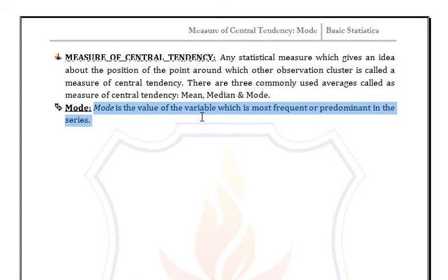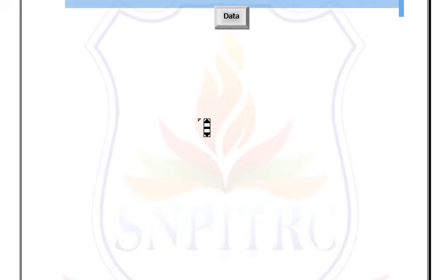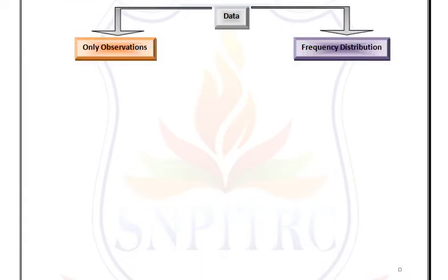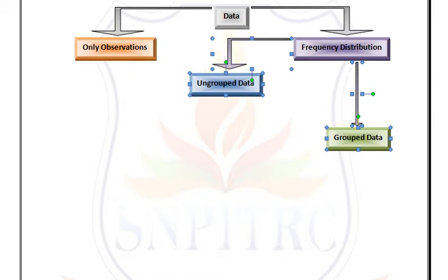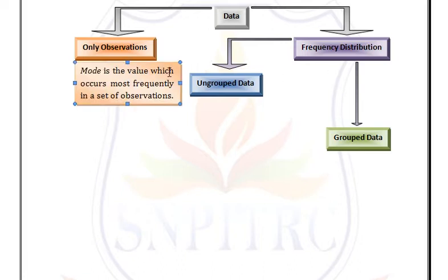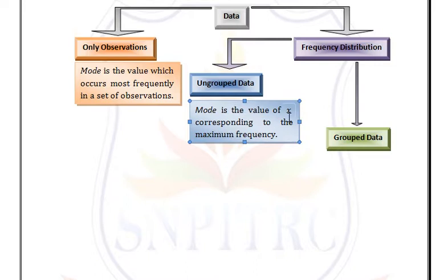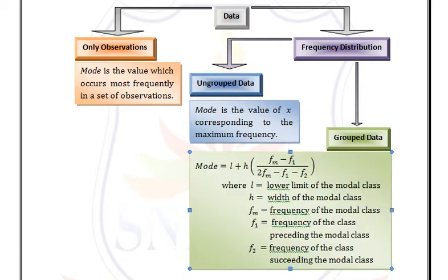We are going to discuss mode now. Mode is the value of the variable which is most frequent or predominant in the series. We have two types of data: only observations and frequency distribution. In frequency distribution we have ungrouped data and grouped data. For only observations, mode is the value which occurs most frequently — the value repeated the maximum number of times.